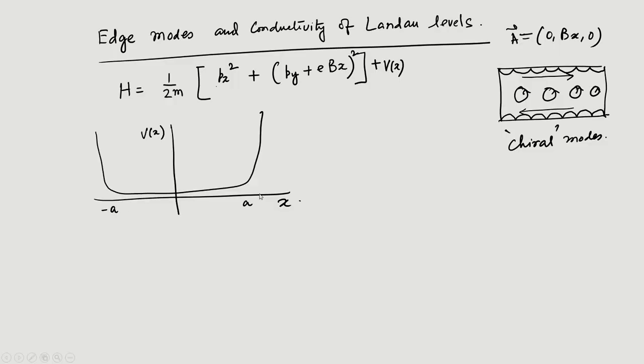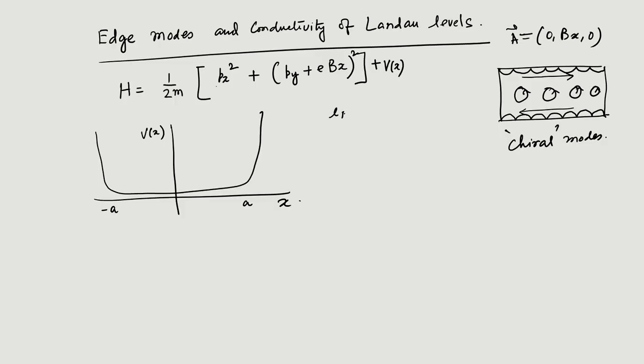At the edges, electrons feel this confining potential. In the absence of this potential, the lowest wave function is simply a Gaussian — the ground state is a Hermite polynomial multiplied by a Gaussian, which for the lowest level is just a Gaussian with width given by the magnetic length L_B = sqrt(h-bar / eB).